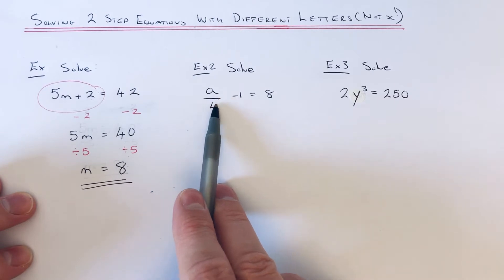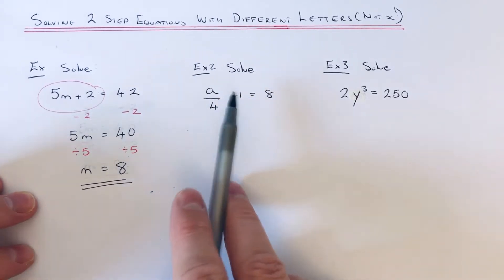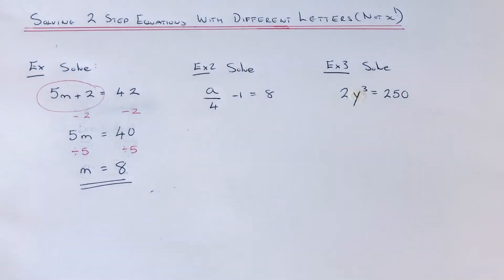First of all, we're dividing it by 4. That line means divide. And then we're taking away 1. So we just need to do the opposites then in a reverse order.